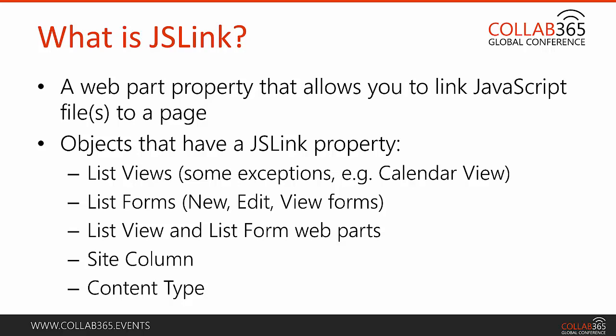We'll also talk about list forms — with any list you get standard new, edit, and view forms. List view and list form web parts can be placed on a wiki page, and you can add JSLink to those web parts as well. You can also add JSLink to site columns and content types. For example, if you want every column in every library or list on your site to have the same functionality, you add the JSLink to the site column, and wherever that column is used it will execute. The three items we'll focus on are list views, list forms, and list view and edit form web parts.